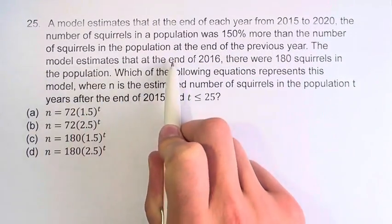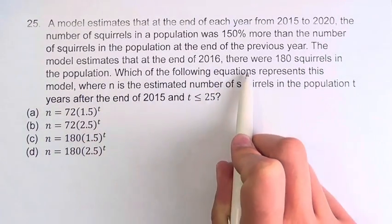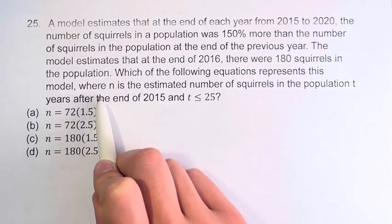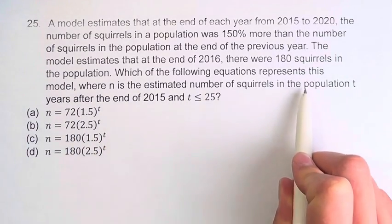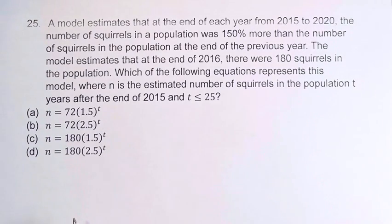The model estimates that at the end of 2016, there were 180 squirrels in the population, and we're asked which of the following equations represents this model where n is the estimated number of squirrels in the population t years after the end of 2015, and t is less than or equal to 25.